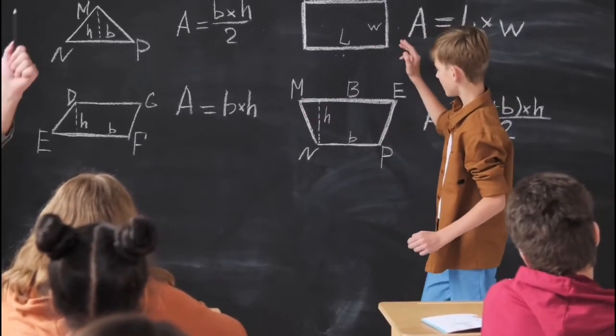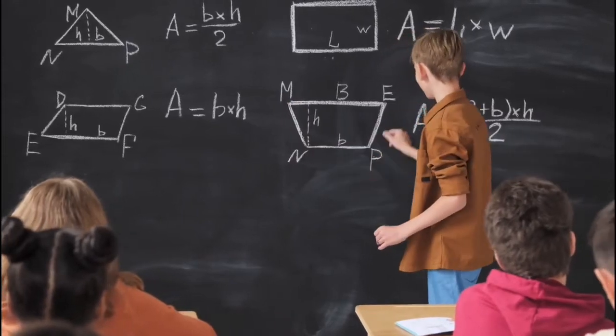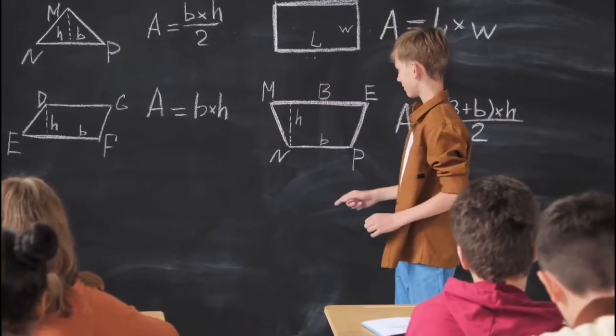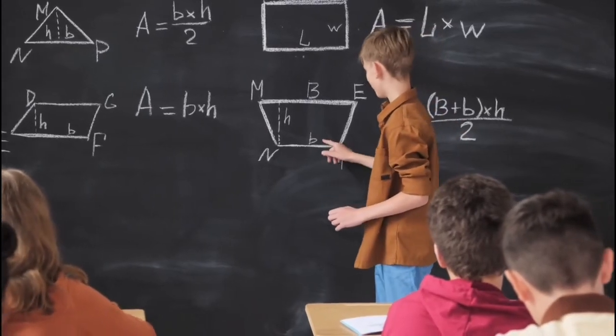you mark off the length of the barometer along the wall. You then count the number of marks, and this will give you the height of the building in barometer units. A very direct method.